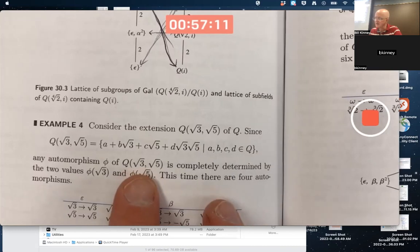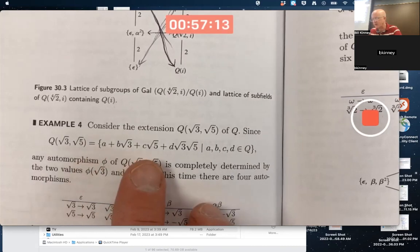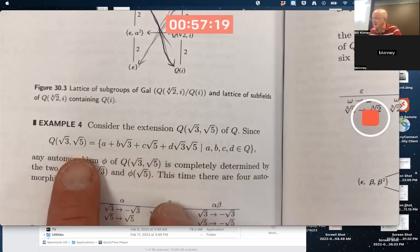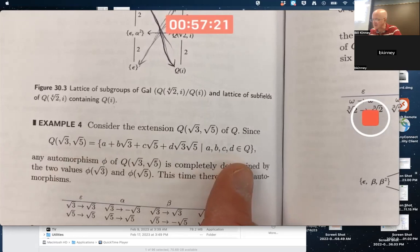It is a degree 4 extension. 1, square root of 3, square root of 5, and square root of 3 times square root of 5 do form a basis to make this a degree 4 extension, a four-dimensional vector space over the rationals.